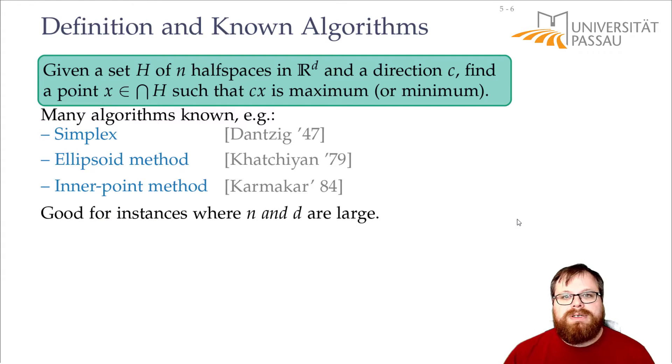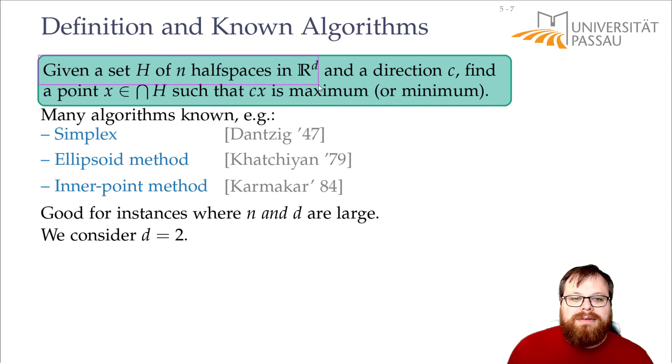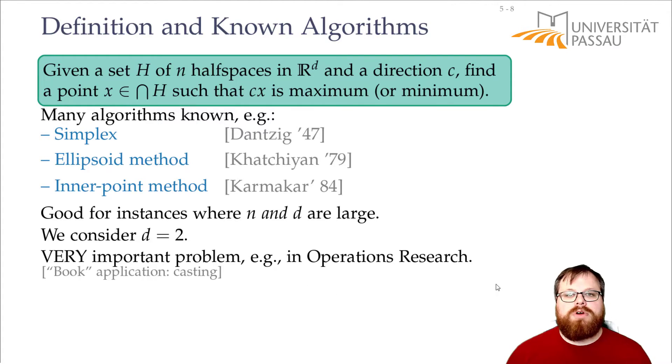But we today want to focus on a special case where n can be large but where d is small and we want to consider d equals 2. So we have linear programs where we only have two variables. Those are very special. But that means that we have a problem in the plane. So we want to intersect n half planes. And although this looks very restricted it's still a very important problem.